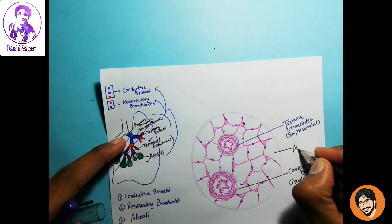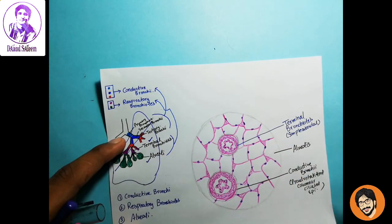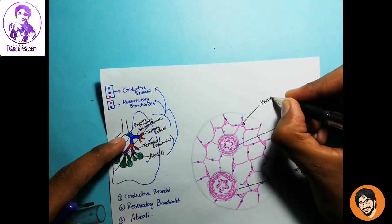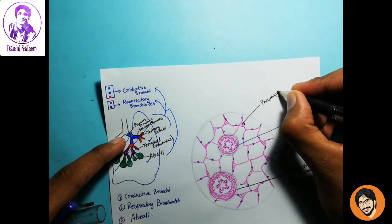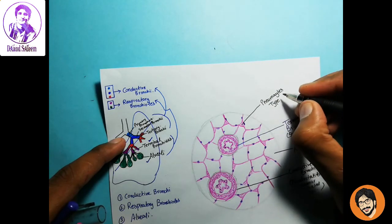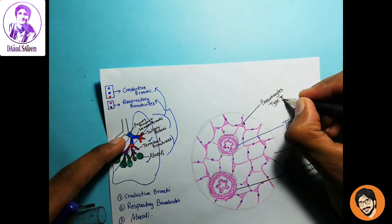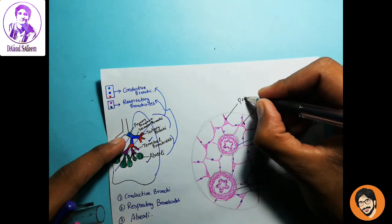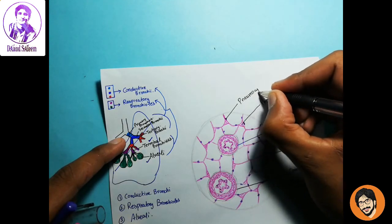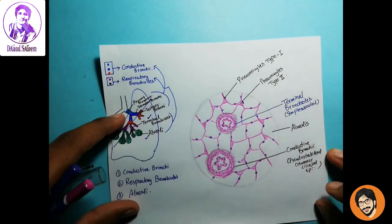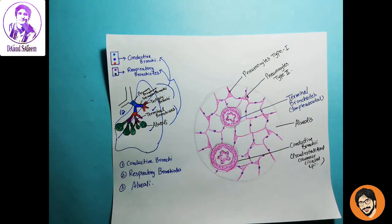These are pneumocytes type 2 cells and these are pneumocytes type 1. This is the diagram of lungs. Thank you.